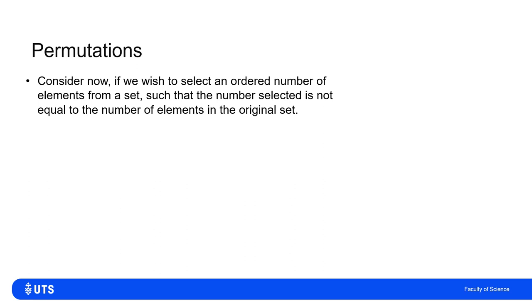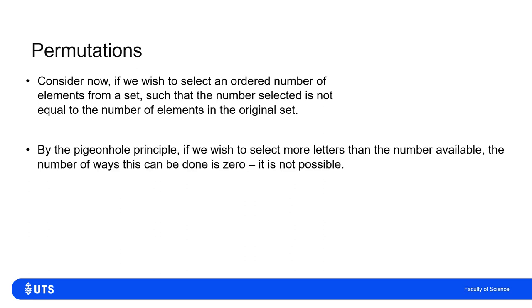The permutations which we calculated on the previous slide were concerned with ordering four letters in a string of four letters. But we can also consider cases where the number of elements available to us in the original set and the number of elements that I have in my ordered selection are not the same. Now there's two cases here. The first case is, I think, very easy, very trivial.